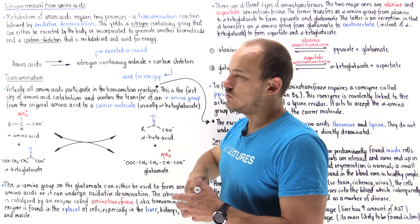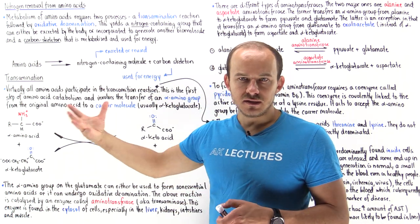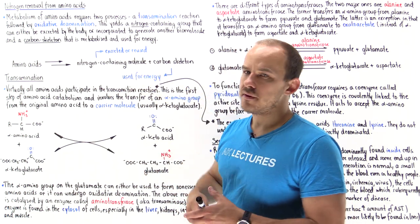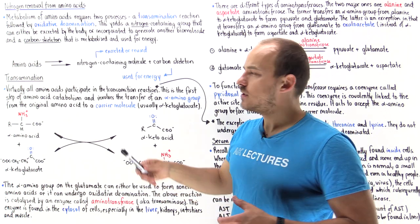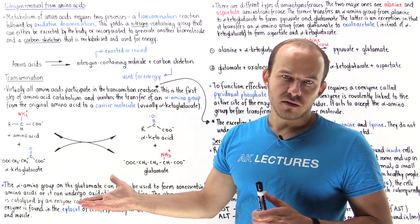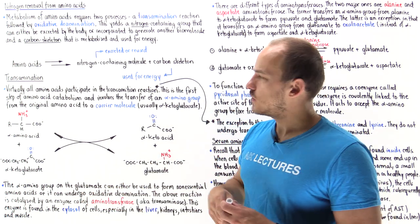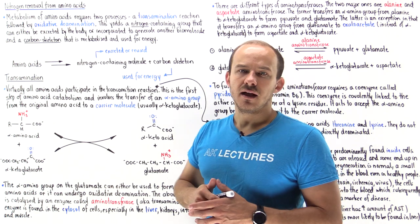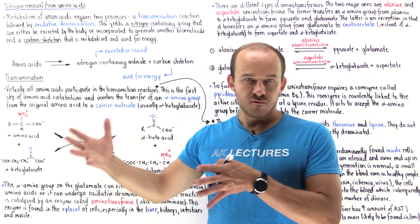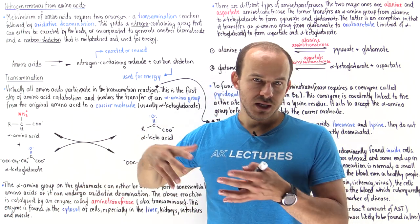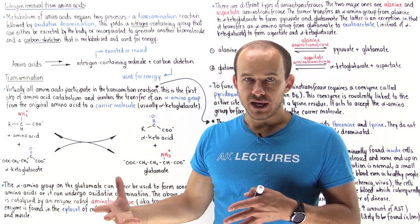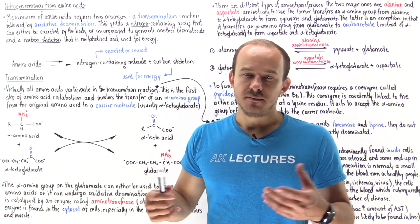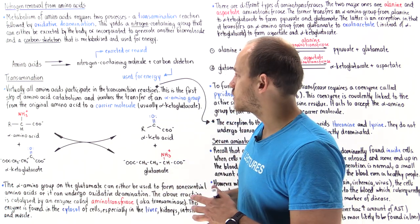The nitrogen-containing molecule, depending on the needs of the cell, can either be excreted from the body or it can be reused to help form another biological molecule. When we form the carbon skeleton, that carbon skeleton can be transformed into intermediate molecules that can be used to help form energy molecules — so ATP molecules.